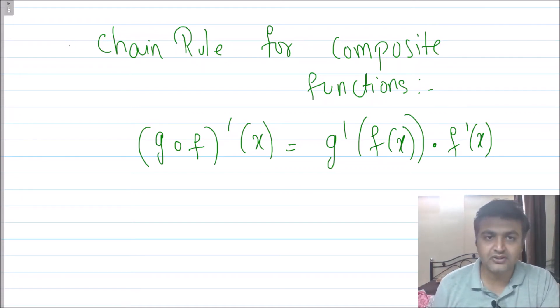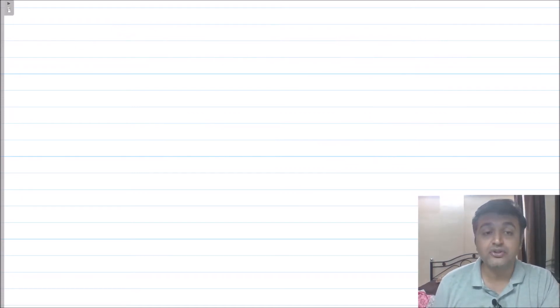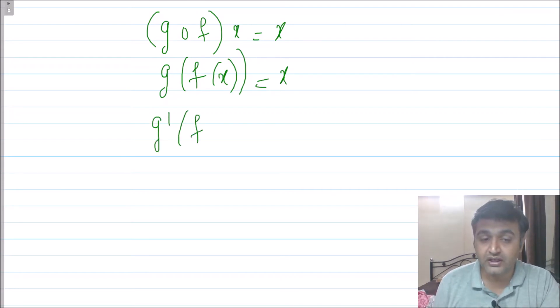What is given to you? g is the inverse of f, which means g compose f is nothing but x itself. That means g of f of x is x. Now take the derivative on both sides. By the chain rule for composition, the derivative of g compose f times f dash of x equals 1, since the derivative of x is 1.